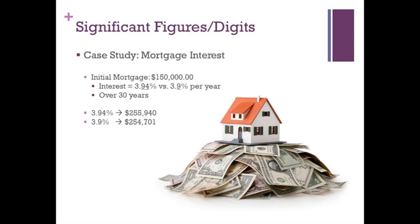Case in point, if you purchase a house for 150K at an interest rate of 3.94% versus 3.9% per year over the course of 30 years, that's a difference of $1,239, which could be invested to gain even more money or in a good trip with your family.